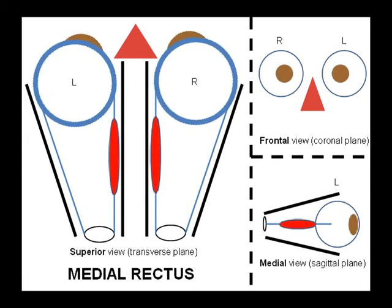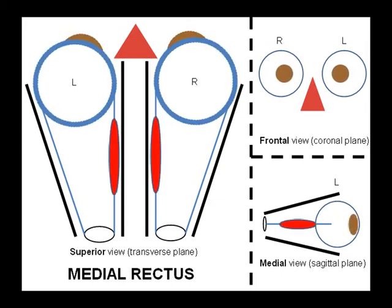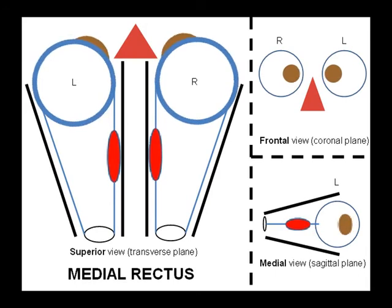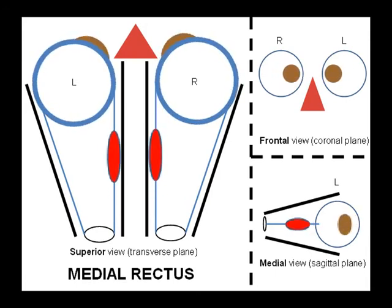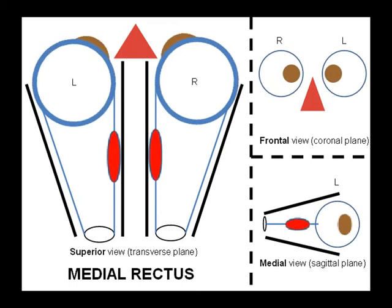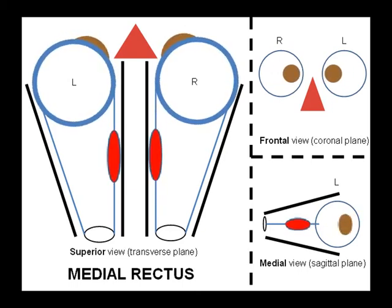Similarly, medial rectus moves the eyeball only in the transverse plane; however, medial rectus adducts the eyeballs. We can see that medial rectus takes its origin from the tendinous ring and inserts on the medial aspect of the eyeball. This leads to adduction. Once again, medial rectus only has a single component to its action.